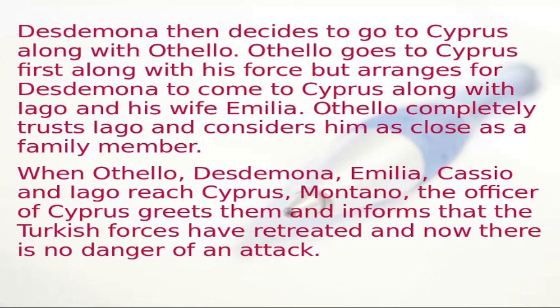Desdemona decides to go to Cyprus along with Othello. Othello goes to Cyprus first with his forces, but arranges for Desdemona to travel with Iago and his wife Emilia. Othello completely trusts Iago and considers him as close as family. When Othello, Desdemona, Emilia, Casio, and Iago reach Cyprus, Montano, the officer of Cyprus, greets them and informs them that the Turkish forces have retreated and there is no longer any danger of attack.